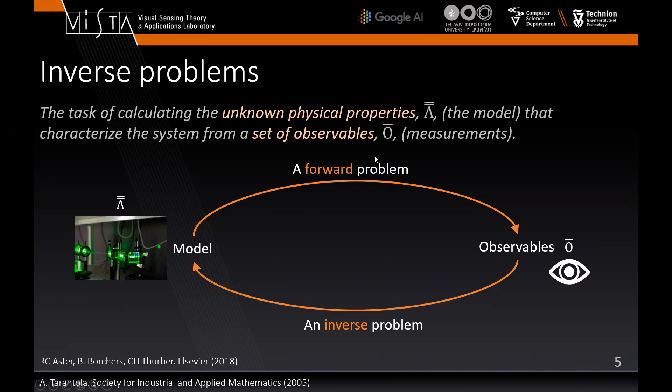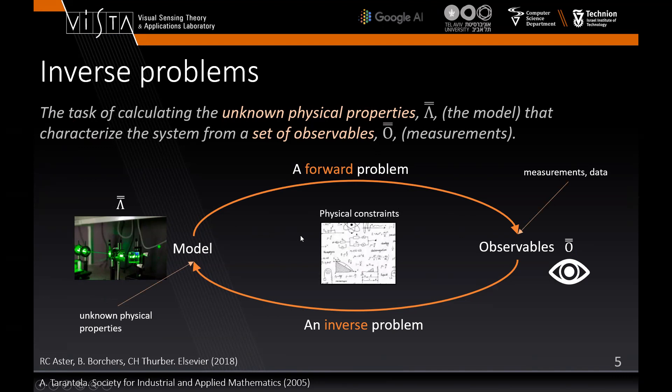Inverse problems is the task of calculating the unknown physical properties that characterize the system from a set of observables. It basically answers the question: what is the system designed for generating a required physical phenomenon? Introducing physical constraints will improve predictive accuracy and statistical efficiency of the model by removing physically implausible predictions.